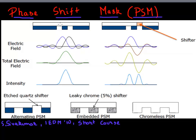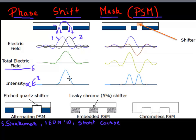PSM involves the simple concept that if you have two features next to each other and you have light coming in from both of them, the electric fields from these two features add up constructively — constructive interference in the electric field. Intensity, which is essentially the square of the electric field, now shows constructive interference between the two neighboring features.